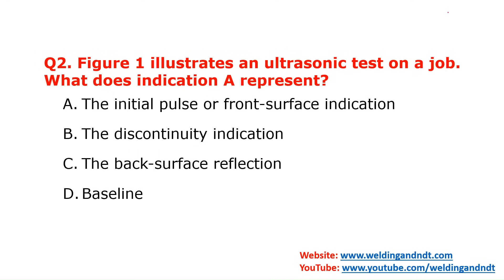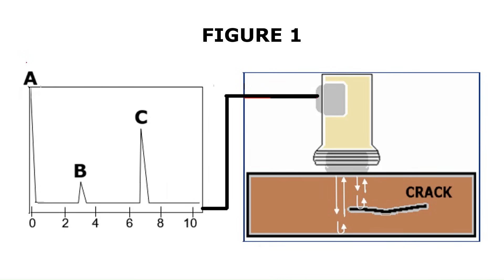Question number two refers to Figure 1, which illustrates an ultrasonic test on a job. It asks what indication A represents. This is a normal probe. If the material is sound, ultrasonic waves are emitted from the probe, travel to the bottom of the job piece, reflect from the bottom, and return to the probe. This reflected signal from the bottom is called the back wall echo.